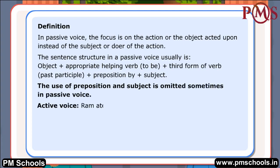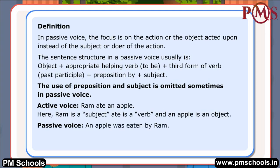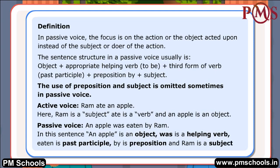Active voice: Ram ate an apple. Here, Ram is the subject, ate is the verb, and an apple is the object. Passive voice: An apple was eaten by Ram. In this sentence, an apple is the object, was is the helping verb, eaten is the past participle, by is the preposition, and Ram is the subject.